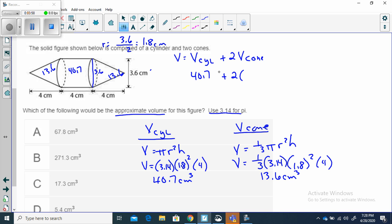You could add them together if you wanted to, or you could multiply your 13.6 by 2. Let's put it in our calculator. 40.7 plus 2 times 13.6, and we get 67.9.